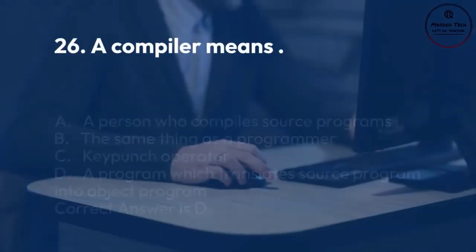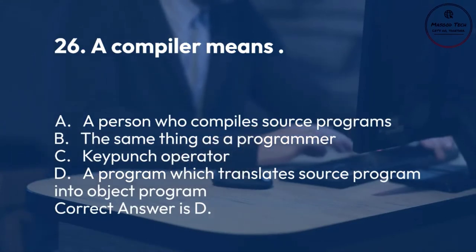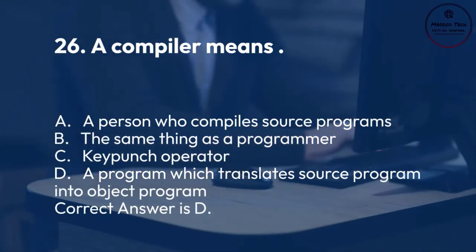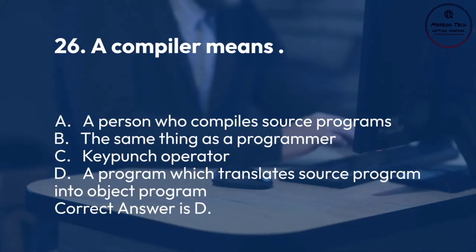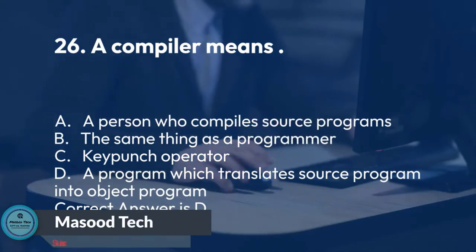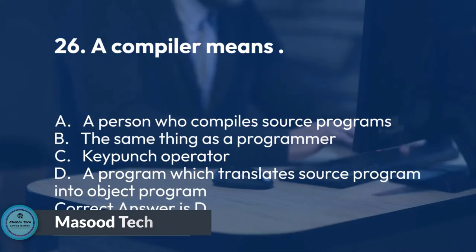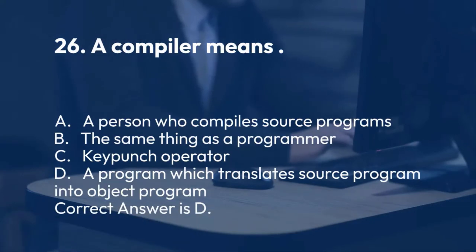Number 26. A compiler means: A. A person who compiles source programs. B. The same thing as a programmer. C. Keypunch operator. D. A program which translates source program into object program. Correct answer is D.